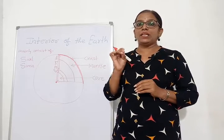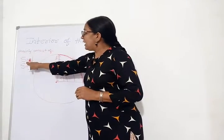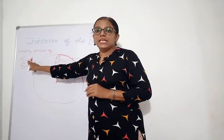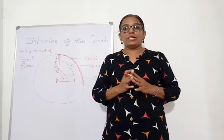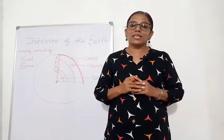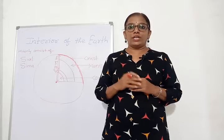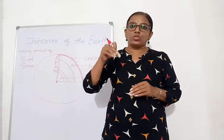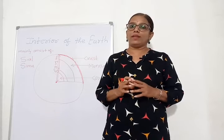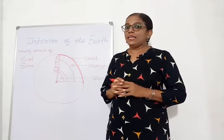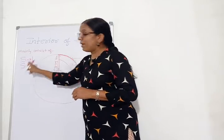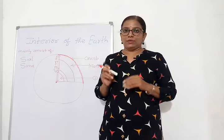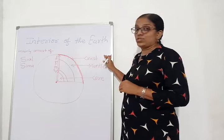Continental crust mainly consists of silica and alumina. Now the second type of crust is the oceanic crust — the land beneath the ocean floor is called the oceanic crust — and it mainly consists of sima, that is silica and magnesium.